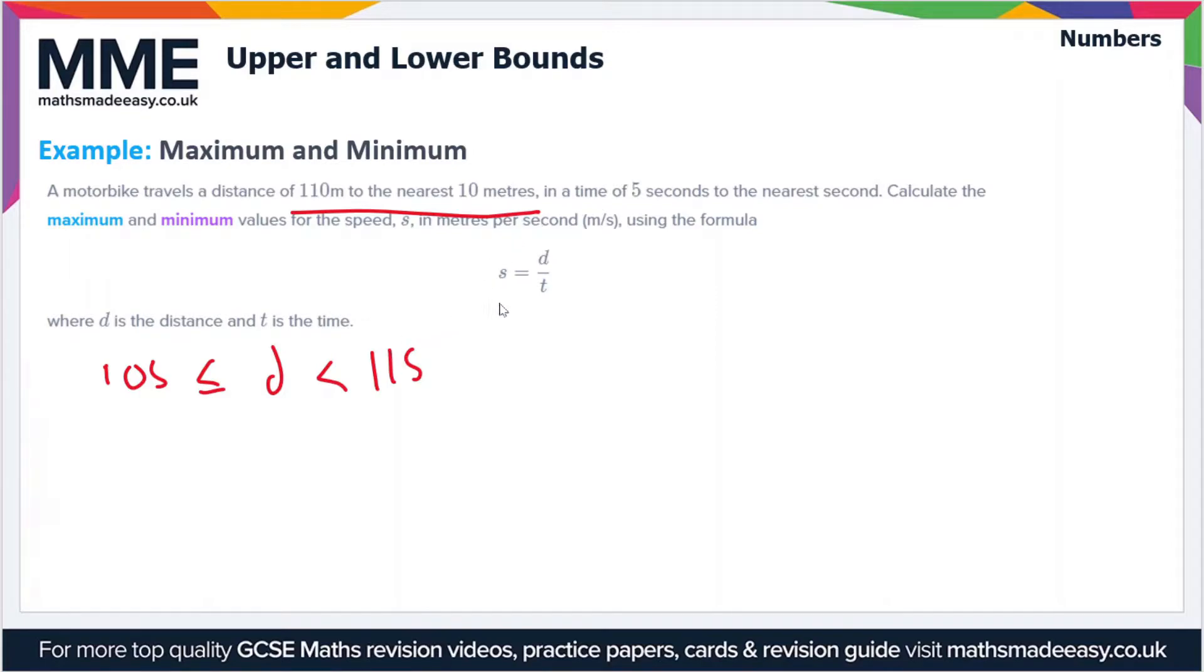Now we'll move on to the time. We have a time of 5 seconds to the nearest second, so t falls within an interval of 4.5 seconds, seeing as though this rounds up to 5 and anything less would round down to 4, and a maximum value of 5.5 but not including 5.5 since that rounds up to 6.